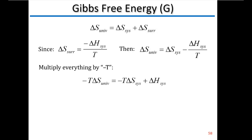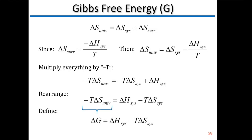Now multiply everything by minus T. That gives us: minus T times delta S of the universe equals minus T times delta S of the system plus delta H of the system. Rearranging, minus T times delta S of the universe equals delta H of the system minus T delta S of the system. We're expressing delta S of the universe in terms of system variables — delta H and delta S of the system. This first term, minus T delta S, we refer to as delta G, the change in Gibbs free energy. So delta G equals delta H of the system minus T delta S of the system.